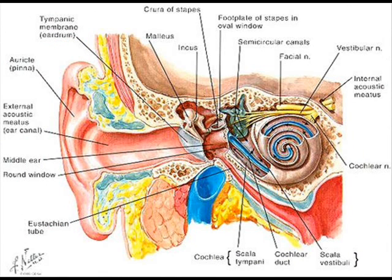The middle ear is a narrow air-filled cavity in the temporal bone. It is spanned by a chain of three tiny bones — the malleus (hammer), incus (anvil), and stapes (stirrup) — collectively called the ossicles.